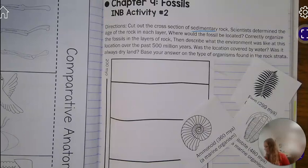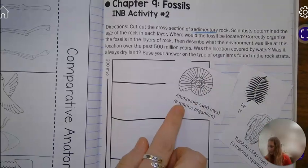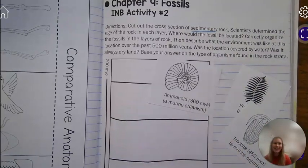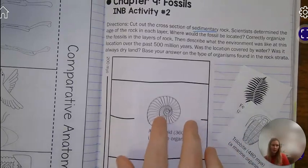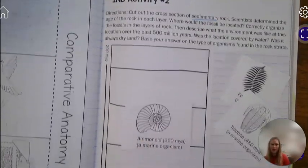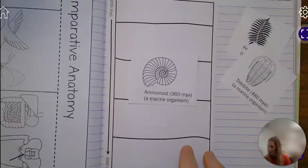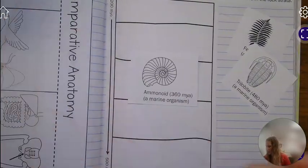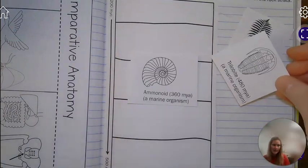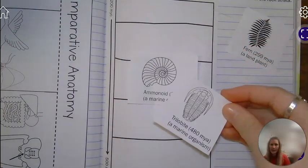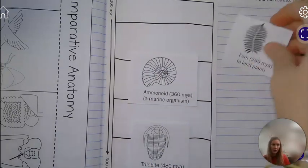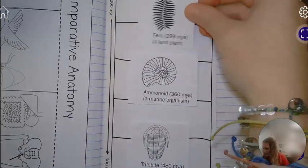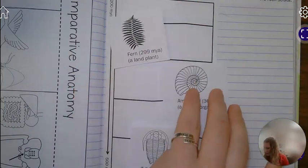So I'm just going to get a little piece of tape. Here I have my ammonoid. It says 360 million years ago, is a marine animal. So that's probably going to go somewhere around here because I've got 500 million years to 200 million years. My trilobite is 480 million years. I'm going to put that down here at the bottom. And then my fern is 299 million years. So I'm going to place that about here.